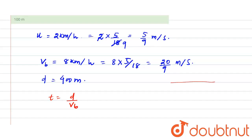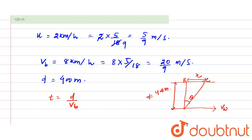Let's suppose this is the direction in which the river flows. The width of the river d = 400 meters. The boat aims at angle theta toward the opposite point B, and the river's current vw acts along the bank. The time taken is t = d / vb = 400 / (20/9) = 400 × 9/20 = 180 seconds.